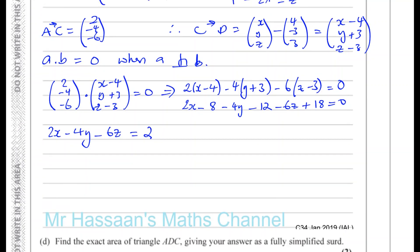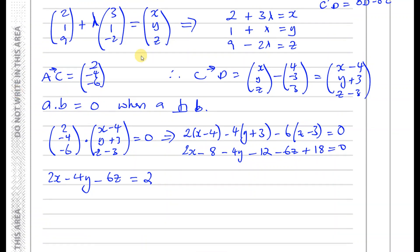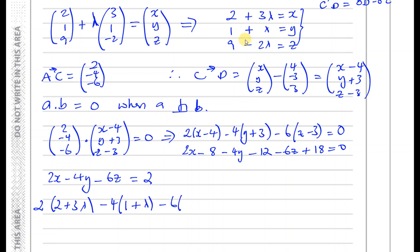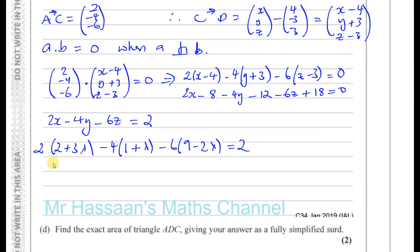So now we've got an equation which we can simplify: 2X minus 4Y minus 6Z equals minus 2. Now I can substitute the parametric expressions: instead of X write 2 plus 3 lambda, instead of Y write 1 plus lambda, and instead of Z write 9 minus 2 lambda, and that has to equal 2.